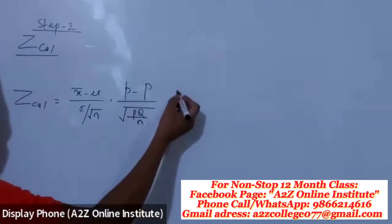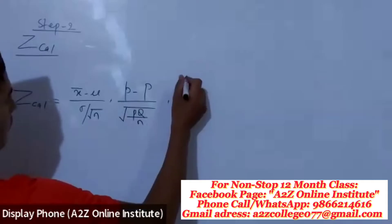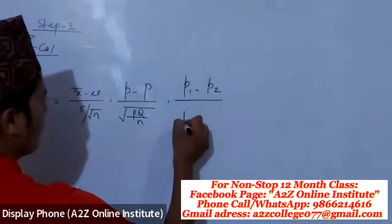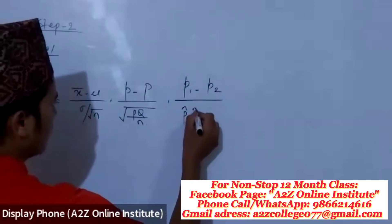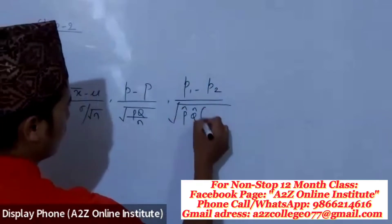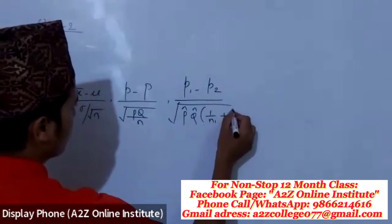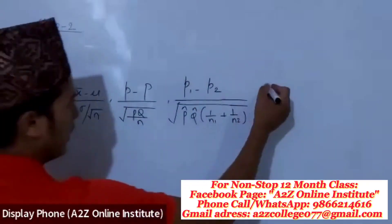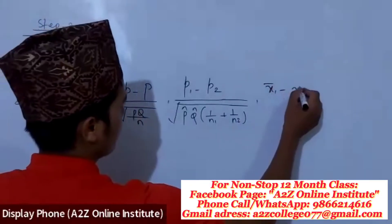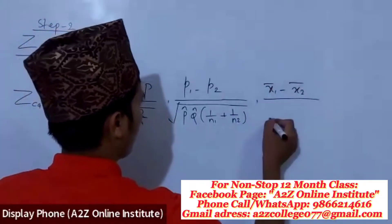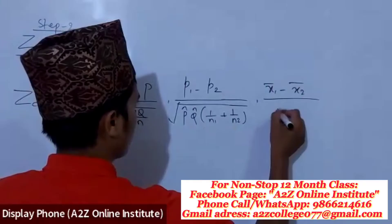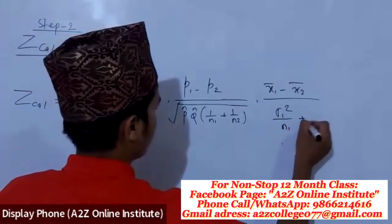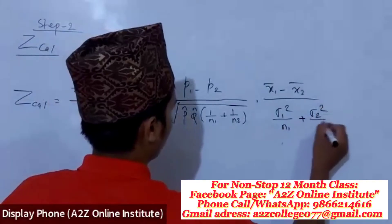Now, for double proportion, it is P1 minus P2 upon P-bar Q-bar times 1 upon N1 plus 1 upon N2. For double mean, it is mean 1 minus mean 2 upon standard deviation 1 squared upon N1 plus standard deviation 2 squared upon N2.